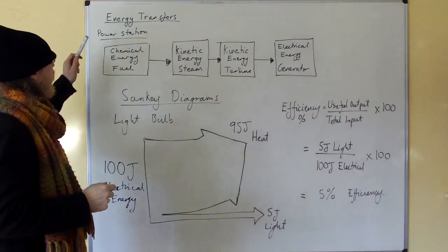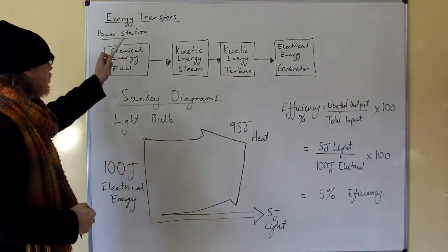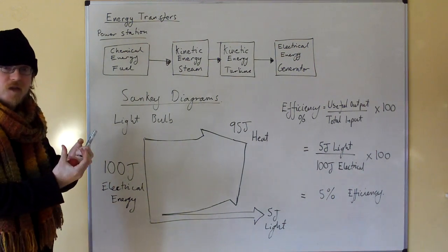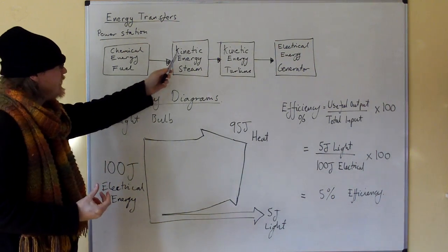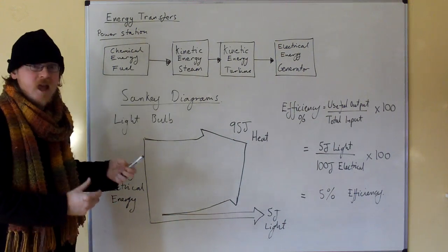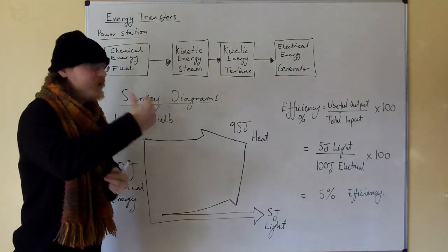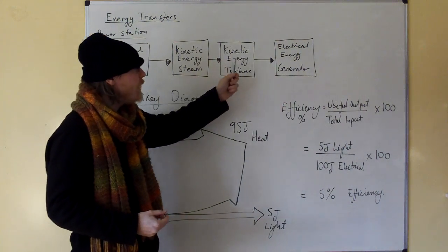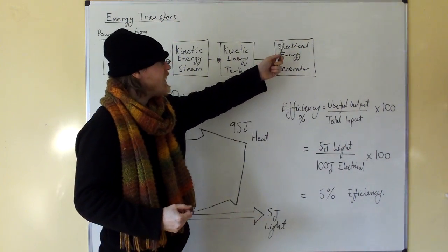Energy transfers in power stations. In a power station, you take the chemical energy from the fuel, you burn the fuel in a boiler to create kinetic energy in steam. This steam is then used to turn a turbine, which creates kinetic energy in the turbine. This turbine drives a generator which makes electrical energy.